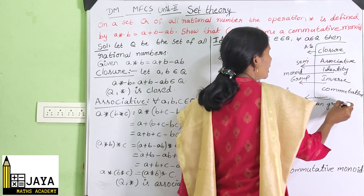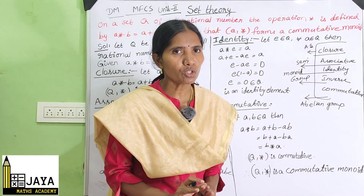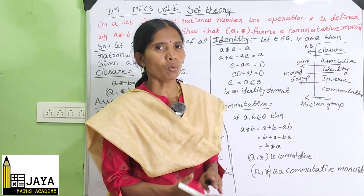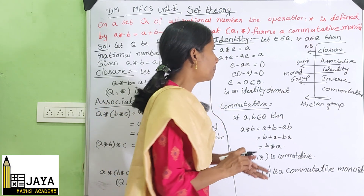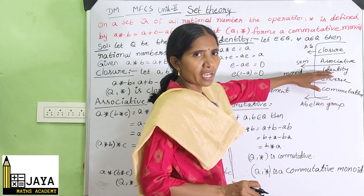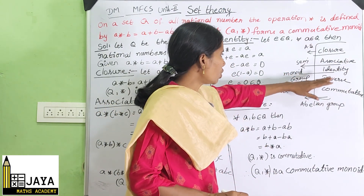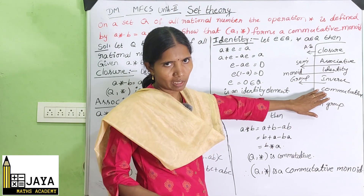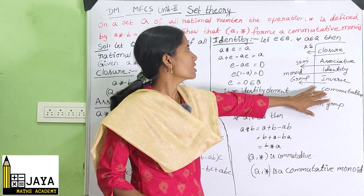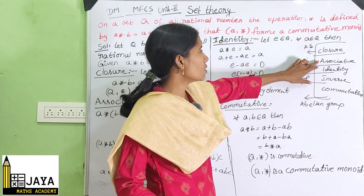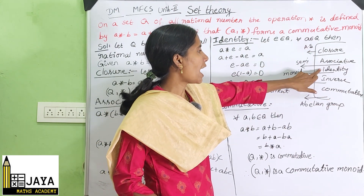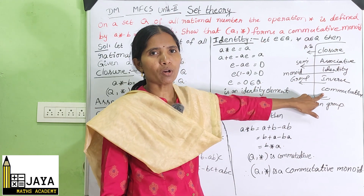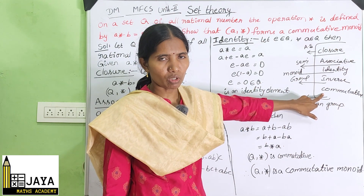So what we want to show is a commutative monoid — up to monoid and also the commutative property we have to check. So first we verify: closure, associative, identity, and commutative properties.